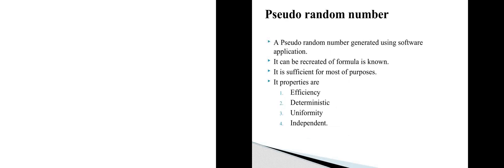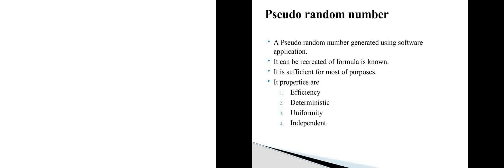Next, we see the second type: pseudo-random numbers. These can be created again and are generated by some software application. The pseudo-random number is generated by a software application using a known formula. If we know the formula, we can recreate the same pseudo-random number.